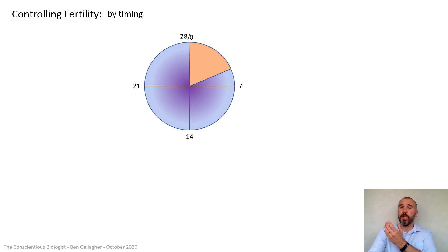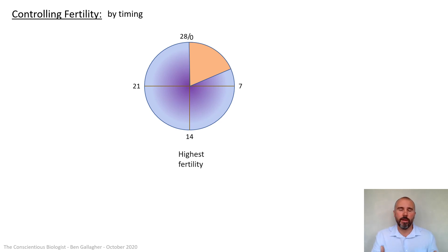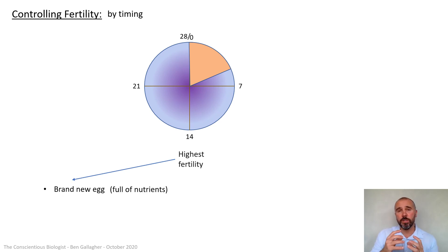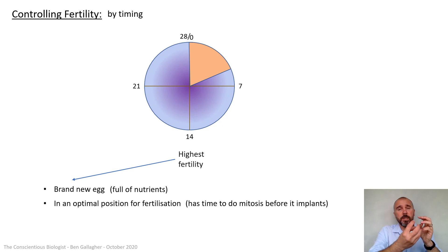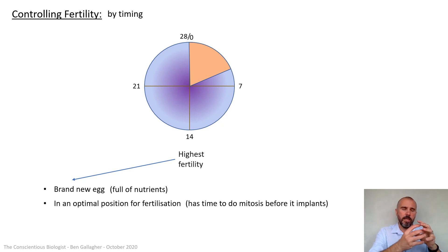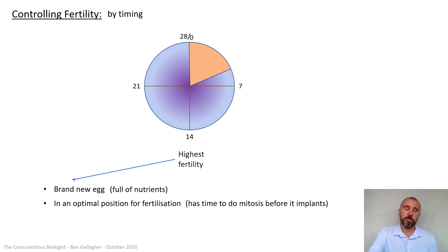Looking at the 28-day menstrual cycle again, the highest fertility is at around day 14 — more specifically, at ovulation. Most women ovulate on day 14 on average. The reason why this has the highest chance of fertility: first, it's a brand new egg, just matured, full of nutrients. Second, it's in the optimum position for fertilization high up in the oviduct, so the fertilized egg can float down, do its first divisions, become a small embryo, and then implant. If fertilization happens much later there won't be time to make those early divisions and successfully implant.